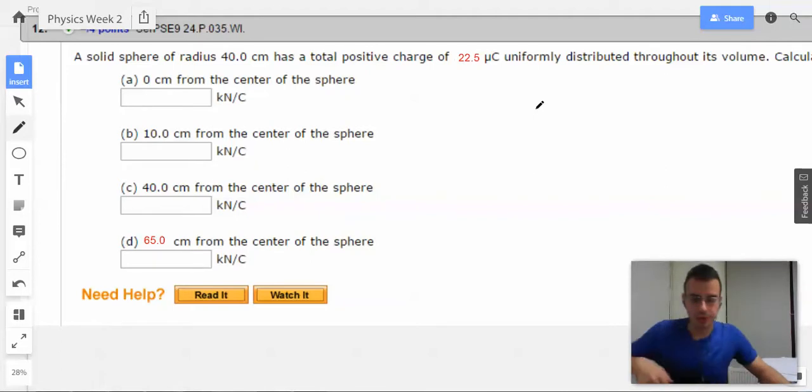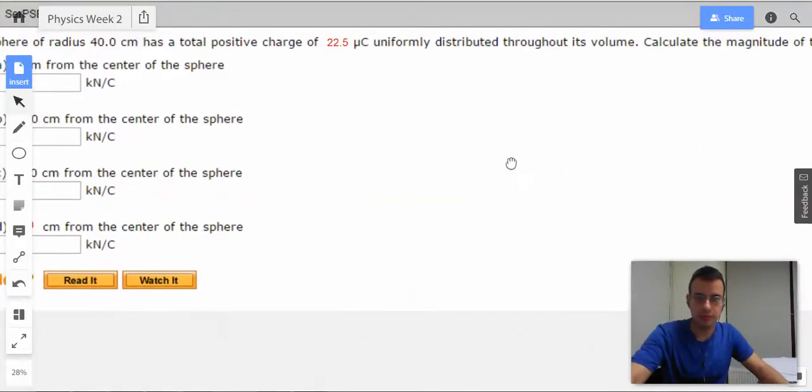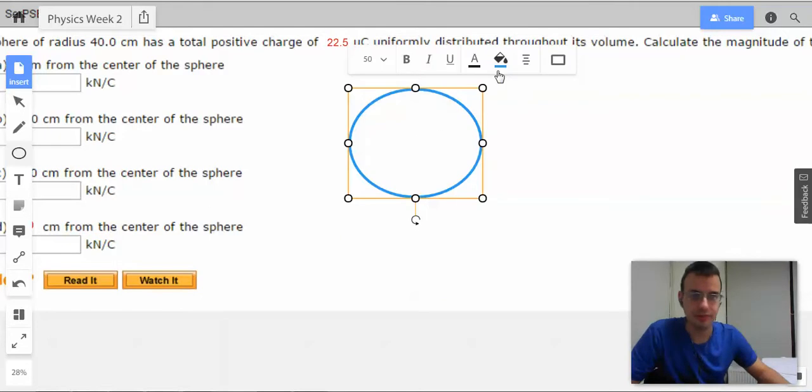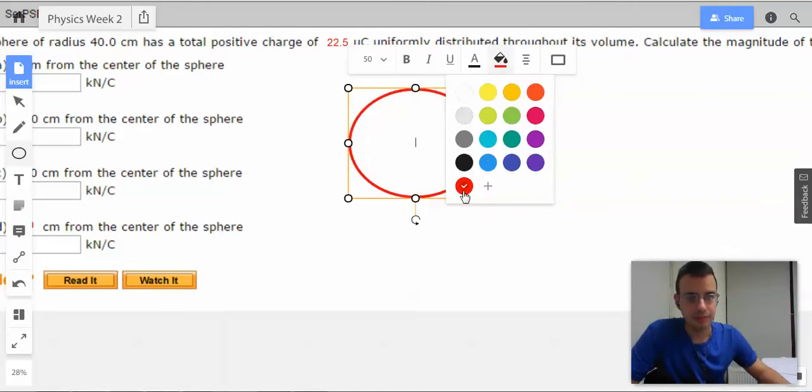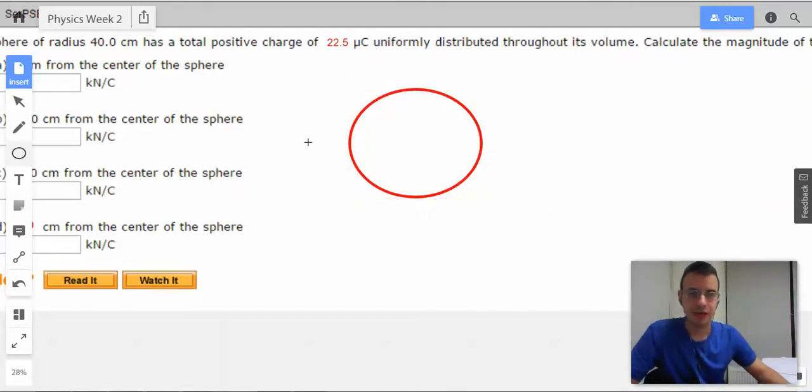So I start by drawing a picture. So we have a sphere. Here's my magic sphere generator. It's actually a circle generator, but I'm going to call it a sphere generator.